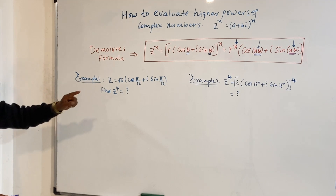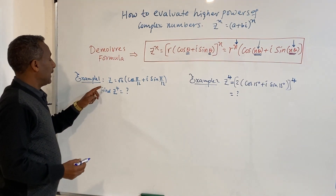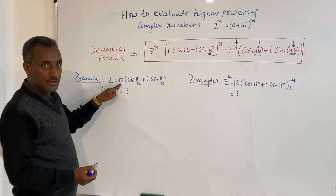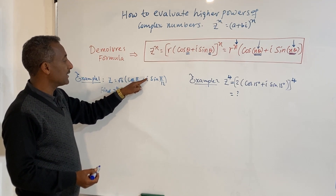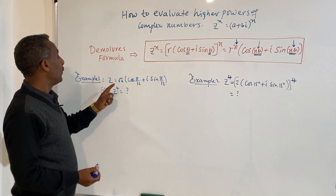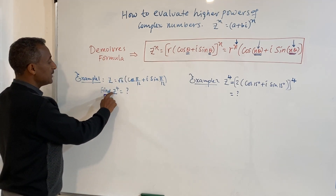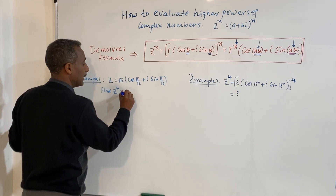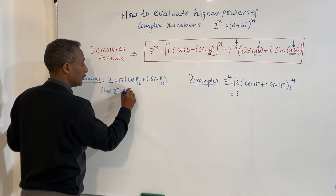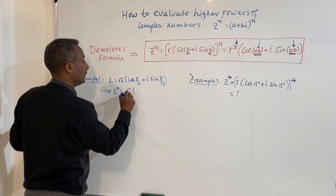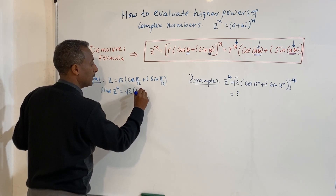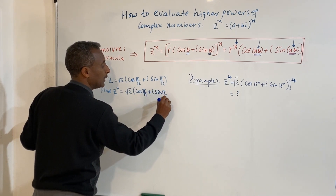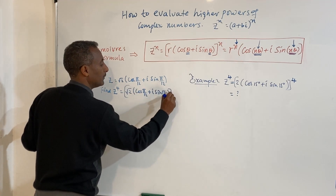So let's do the first two examples first. Let's see: root 2 times (cos π/12 + i sin π/12). We need to raise this to the power of 4. So let's find this power of 4. Here is root 2 (cos π/12 + i sin π/12) to the whole power of 4.